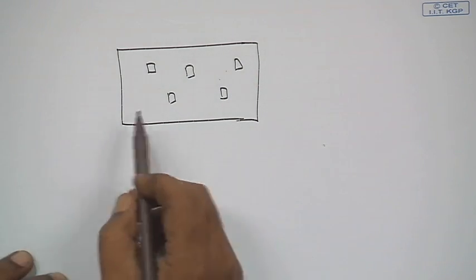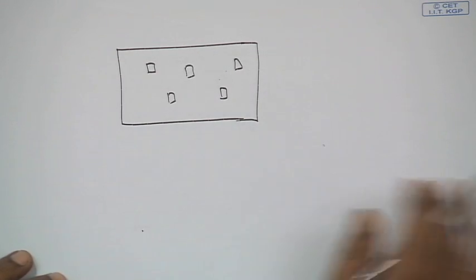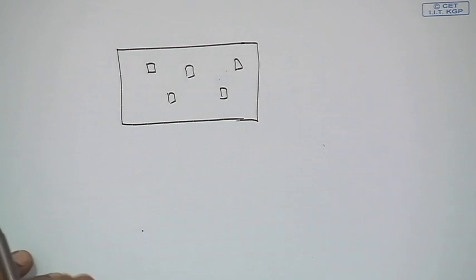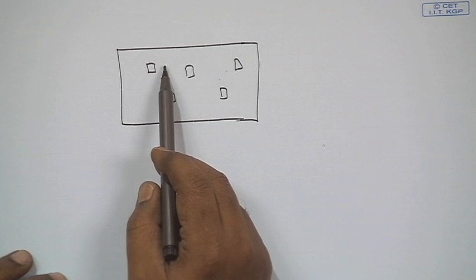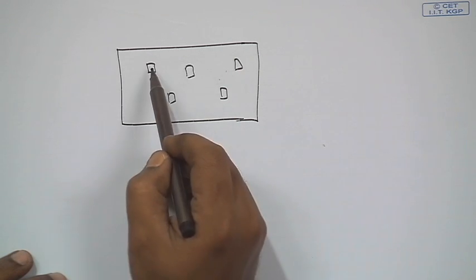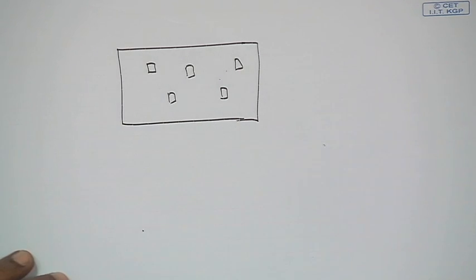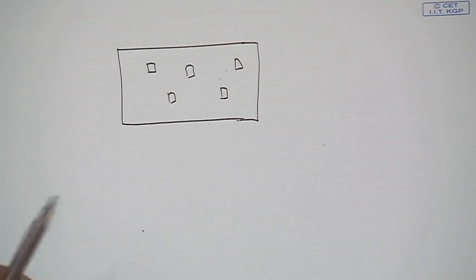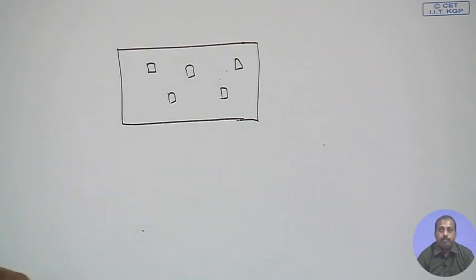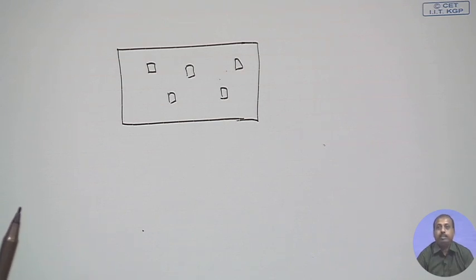Testing such a system becomes difficult because these flip-flops are feeding some logic, and for testing those parts of the logic we need to put these flip-flops into some value. Initial sequential ATPG techniques try to do this — to somehow put these flip-flops to a desired value — but that is very difficult because it depends on the transition pattern of the finite state machine that gets created here.